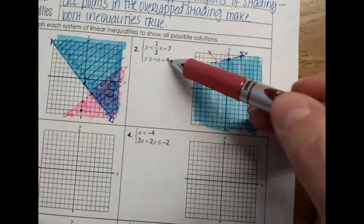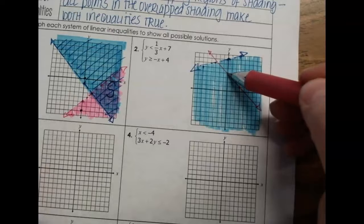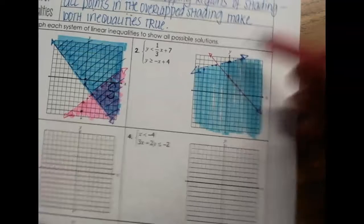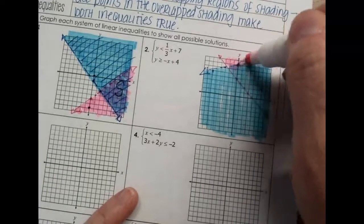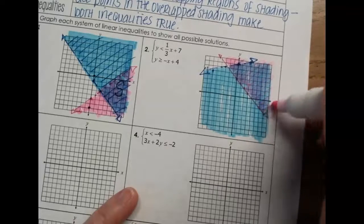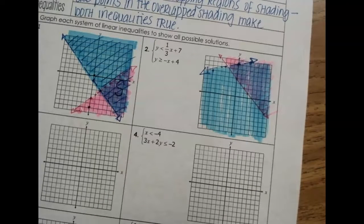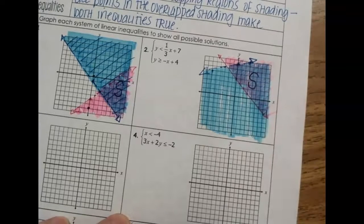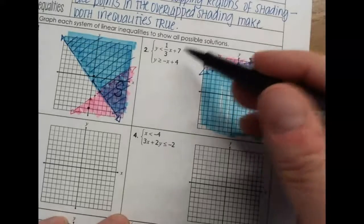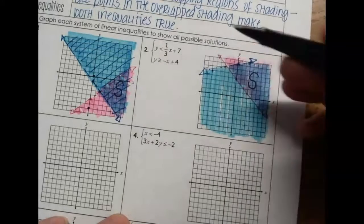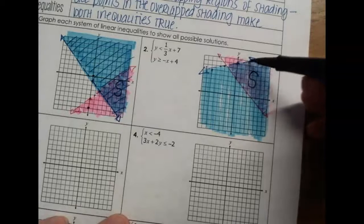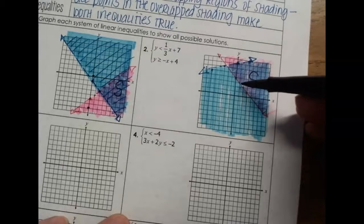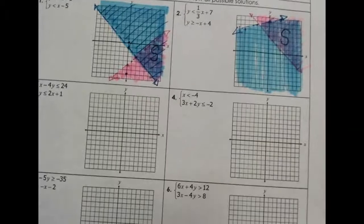Y is greater than the line, so from the y-intercept, where is y bigger than this number? The y values above are greater, so everything above the pink line is going to be shaded. You can see where the shading overlapped — that is our solution area where it turned purple. Any point in the purple area works for both inequalities. Also remember: if it is on the dotted line, it is not part of the solution, but if it is on the solid line, it is.